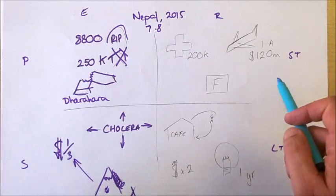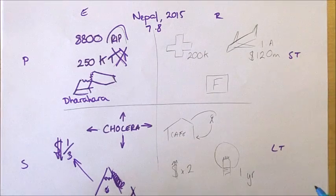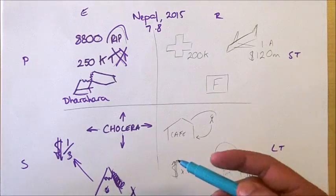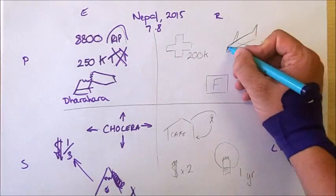So moving on to the responses, we've got the short-term responses. Again, we're trying to go with a similar structure and similar themes to how we did with Christchurch to allow for a more easy comparison.